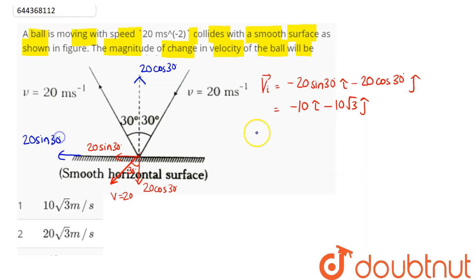Final velocity vector can be written as minus 20 sin 30 i cap and plus 20 cos 30 j cap. This comes as minus 10 i cap plus 10 root 3 j cap.